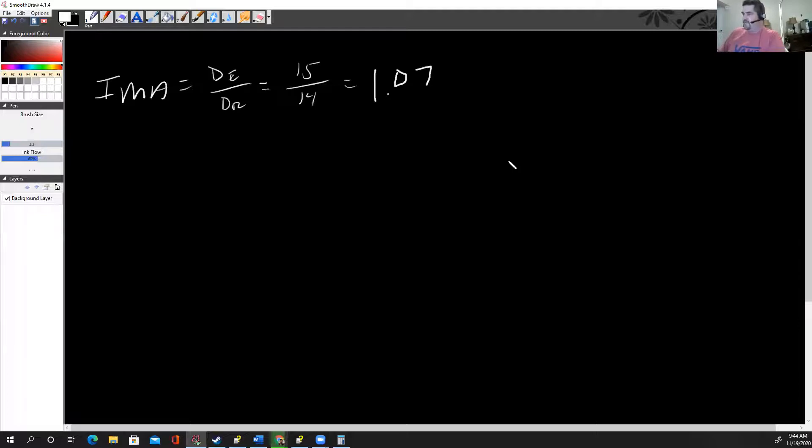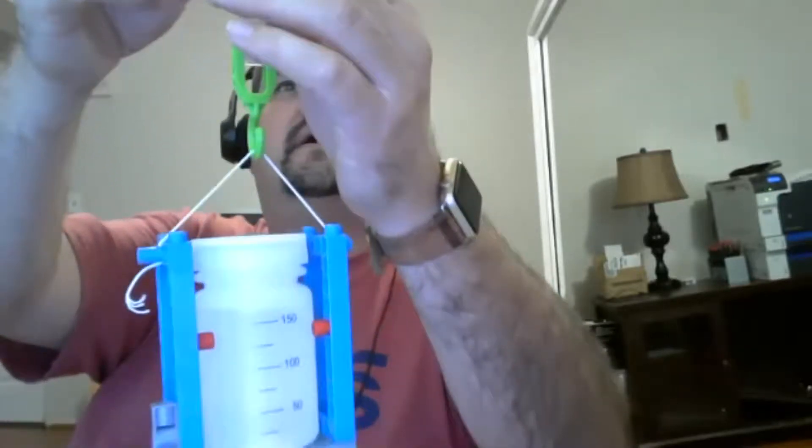So 1.07 is my—not my efficiency, sorry—that's just the IMA, the ideal mechanical advantage. What is it actually? Well, I'm going to take this weight and I'm going to measure it.